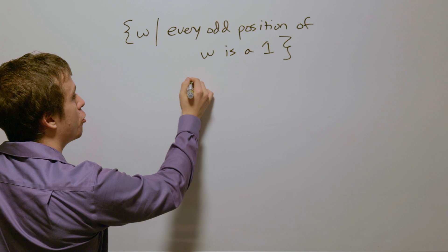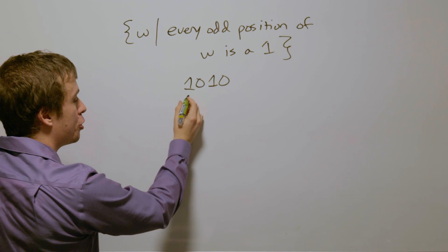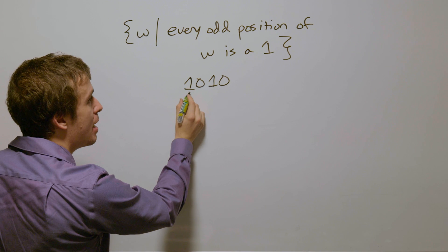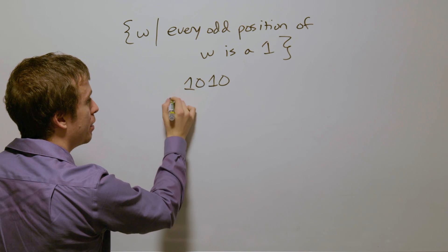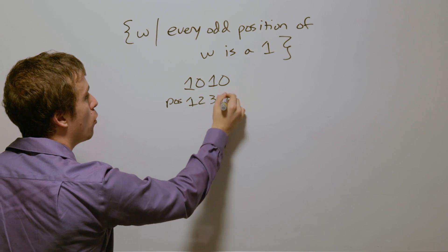So let's consider the string 1, 0, 1, 0. So this string in position one has a one. I'm going to notate the positions right here. This is one, two, three, and four.